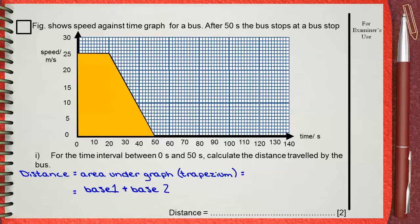Base 1 is 50, which is the bottom base. Base 2 is 20, which is the top base, divided by 2 times height, which is 25.